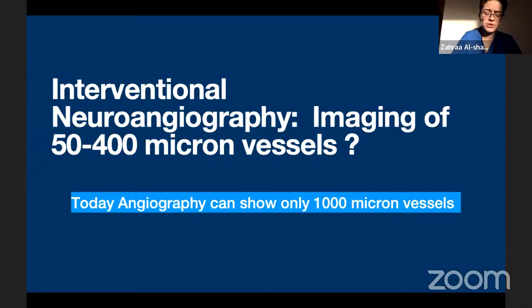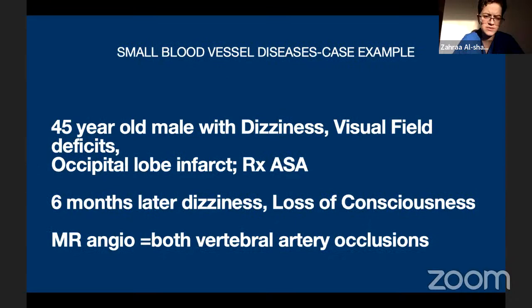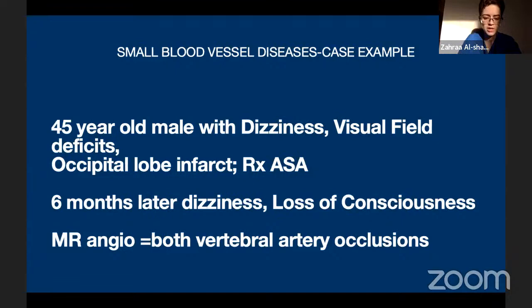This is a snapshot: in 1838 we learned the term lacunes from Dechambre in France; in 1901 the clinical syndromes were described by Marie; in the 1960s Miller Fisher defined lacunar hypotheses; in 1979 he provided clinical-anatomical correlates; and in 1998 Vasquez described the short central artery. Since then our progress has been very limited.